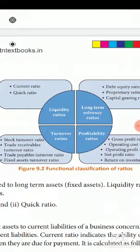We have to look at the four methods: income statement ratios, balance sheet ratios, interest statement ratios. These are the same ratios, but we have to classify them under functional classification, such as liquidity ratios.